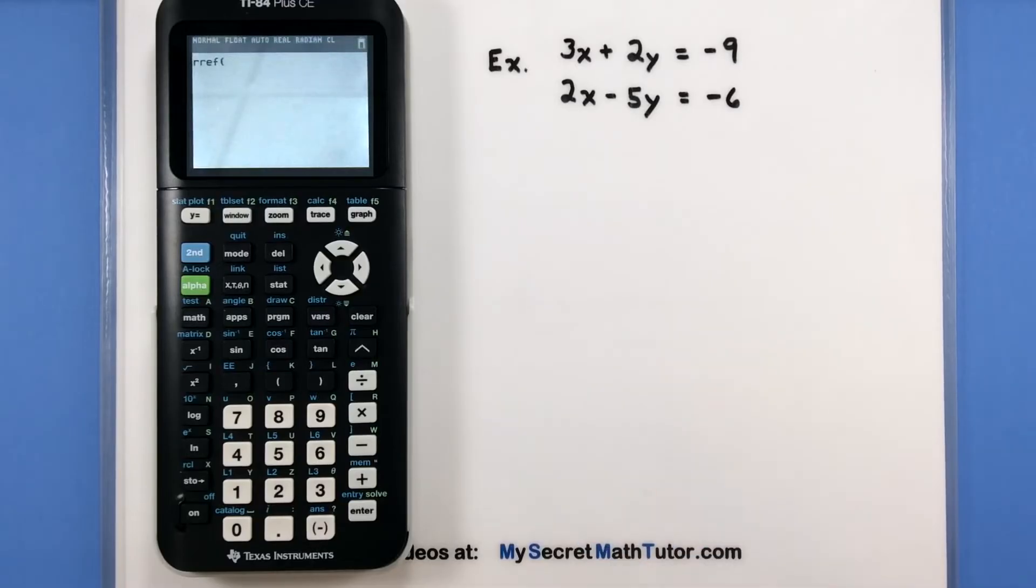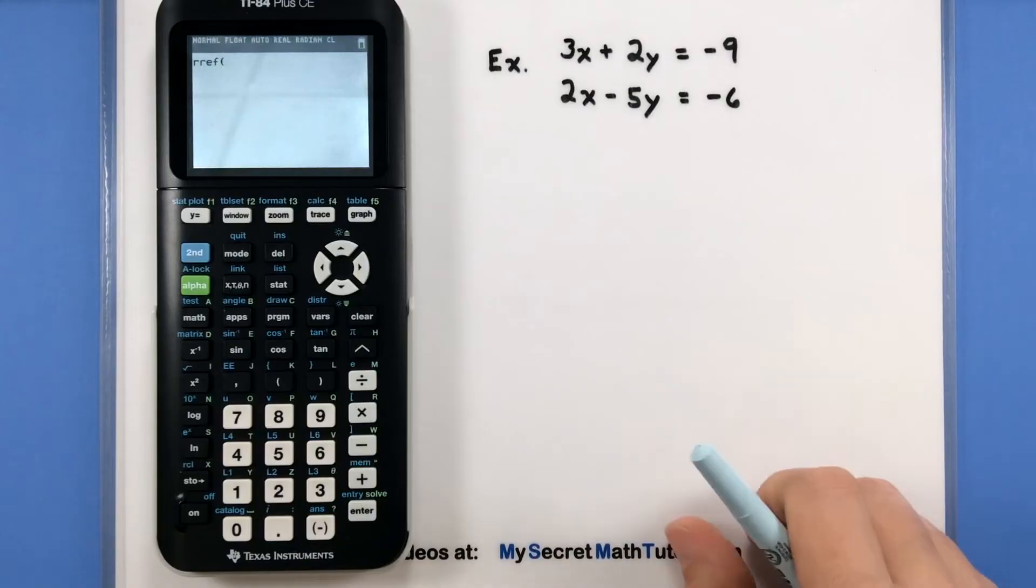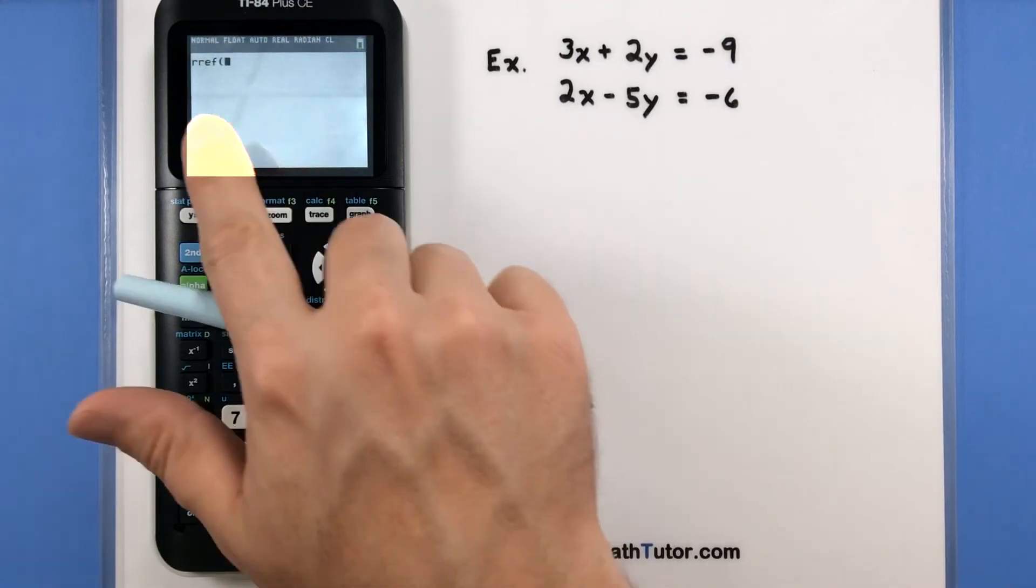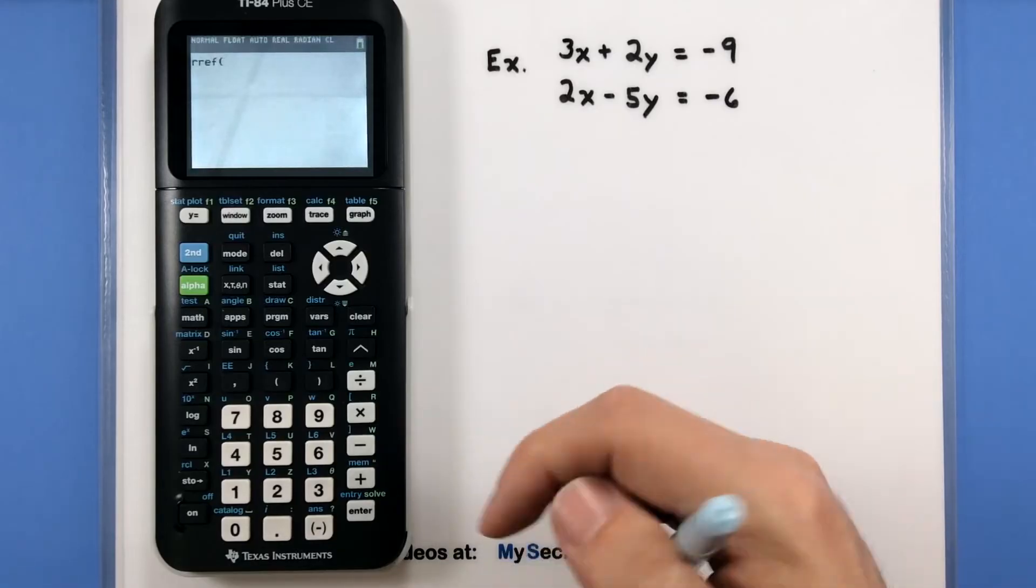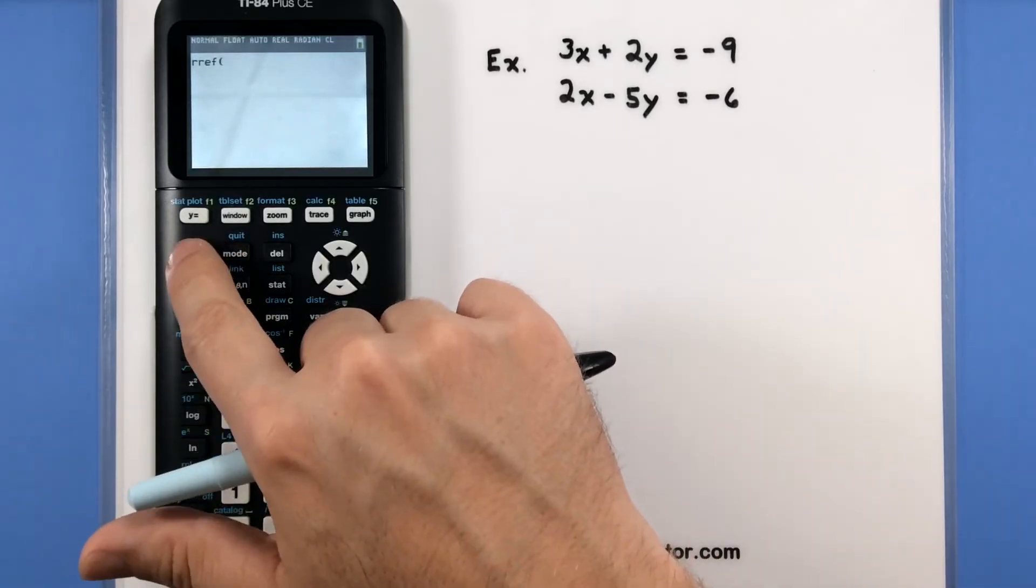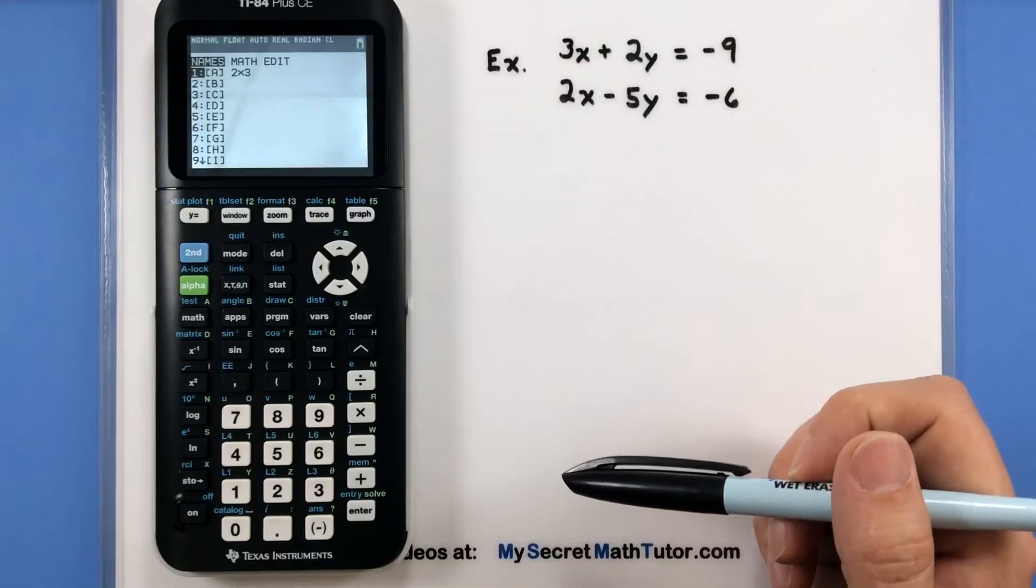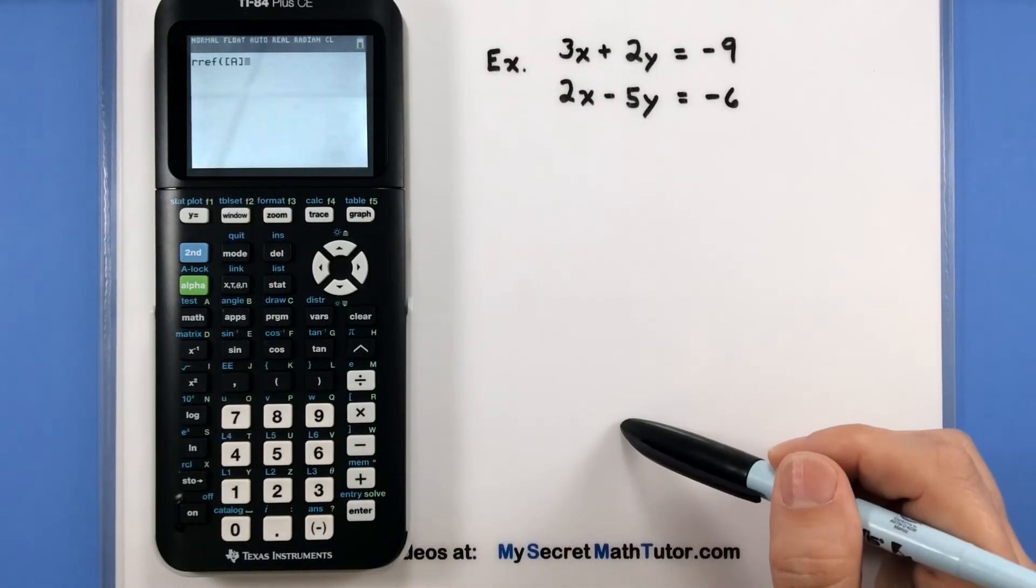Now another common mistake with some of the older ones is actually try and type in the name of your matrix. It works for some of the newer ones or some of the other models of calculators, but I find it's easiest to go back into the matrix screen and select it from the list of matrices. So we're telling it to solve using row reduced echelon form. We just need to tell it what matrix to do it on. So I'll go second, matrix.